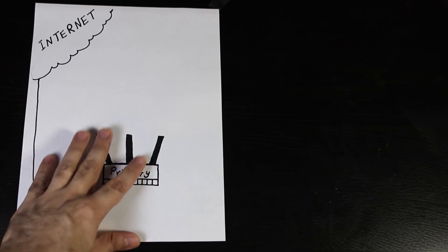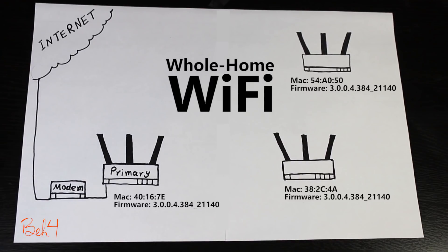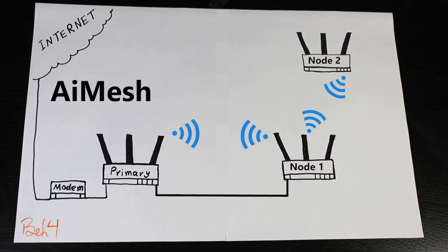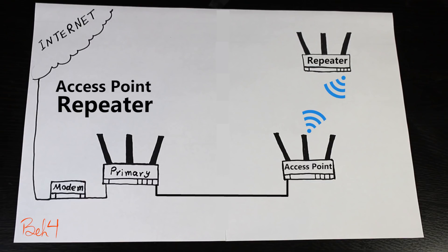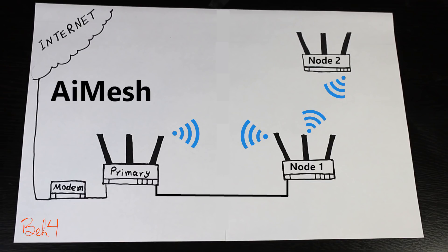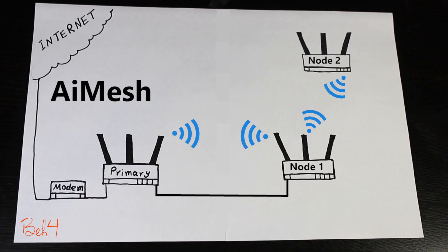In this video I'm going to use three Asus wireless routers and create a whole home Wi-Fi system, once with the help of the Asus AI Mesh system and once with the help of access point and repeater features. Then I'm going to do some tests so we can better understand the performance and behavior of each system.